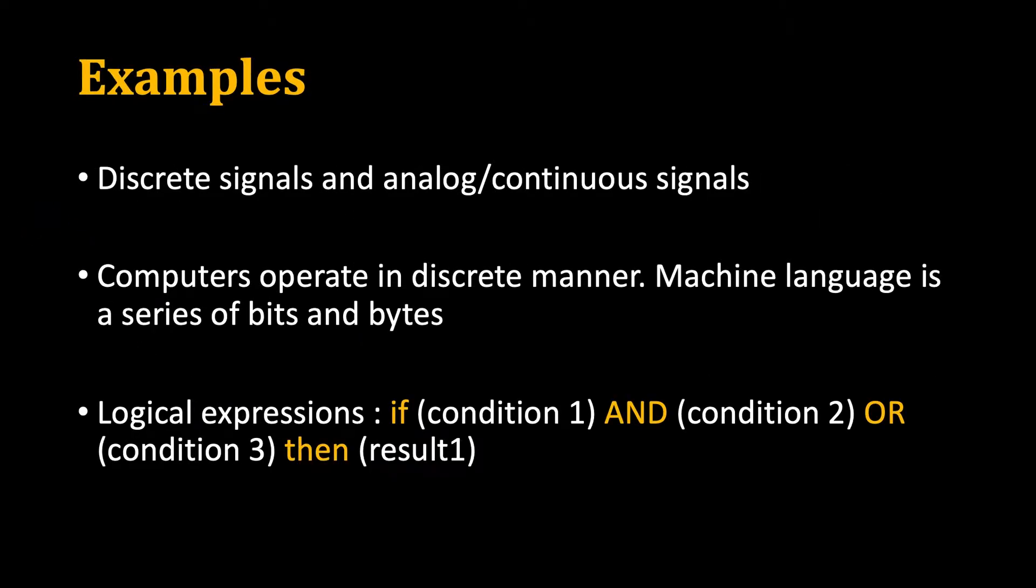Some examples of discrete mathematics will be like we have digital signals or discrete signals and then we have analog or continuous signals in our digital signal processing.